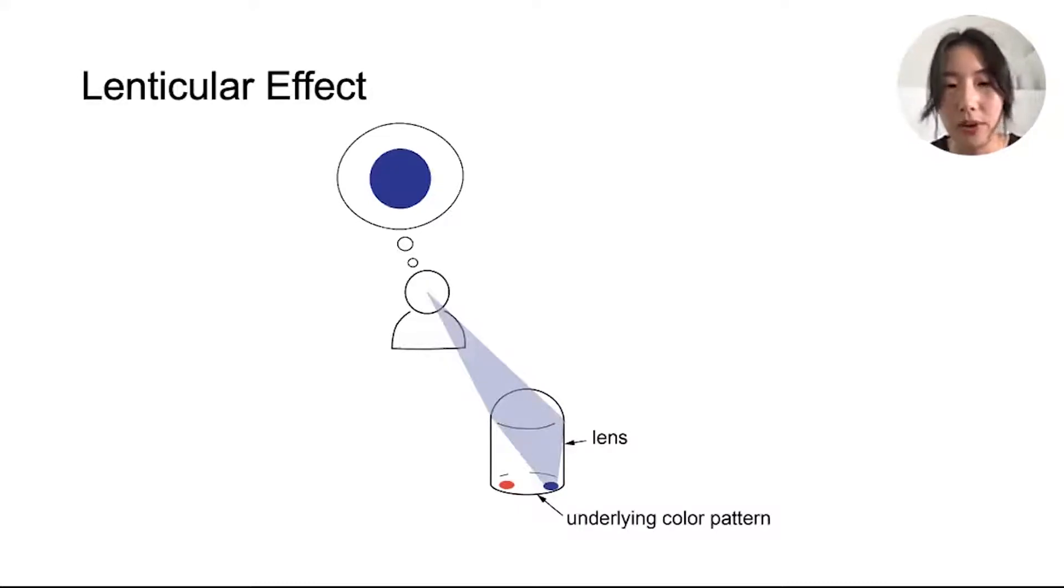If an observer looks at the lens from its left, the shooting rays out of his or her eyes will be refracted onto the blue dot, so that the entire lens will show up as blue.